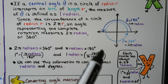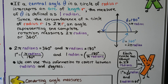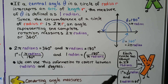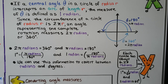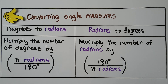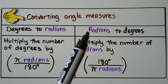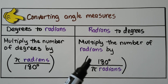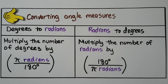See how they swapped places? We can use this information to convert between radians and degrees. Each circle has about 6.28 radians — it's not exact — and 1 degree is approximately 1/60th of a radian, and 1 radian is approximately 60 degrees. To go from degrees to radians, multiply the number of degrees by π/180. To convert radians to degrees, multiply the number of radians by 180°/π.